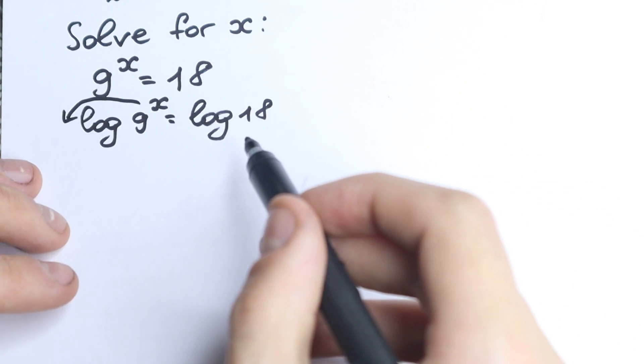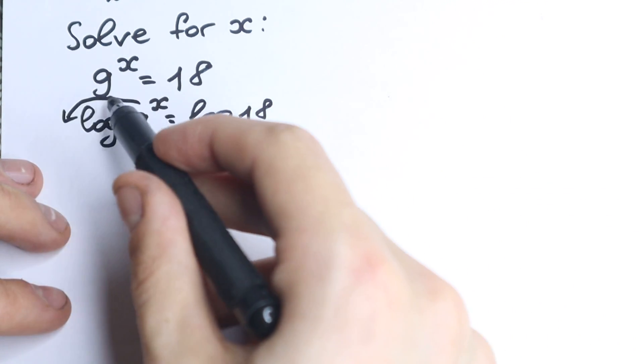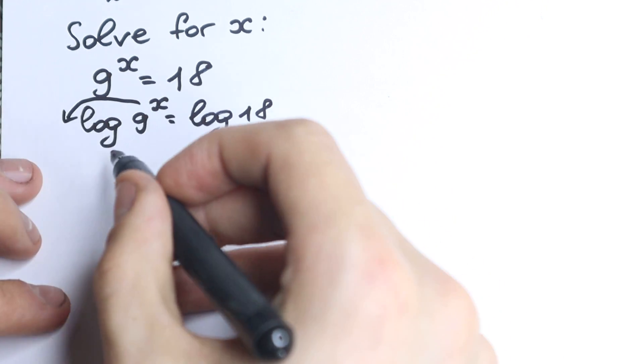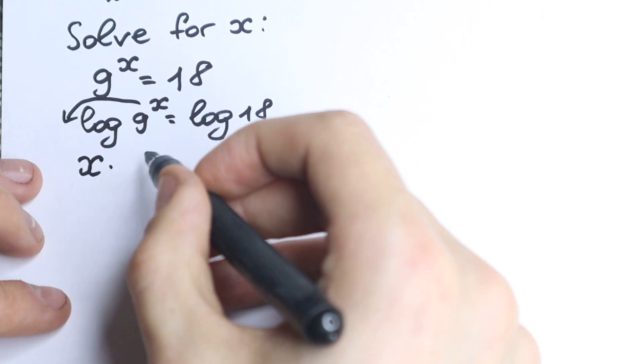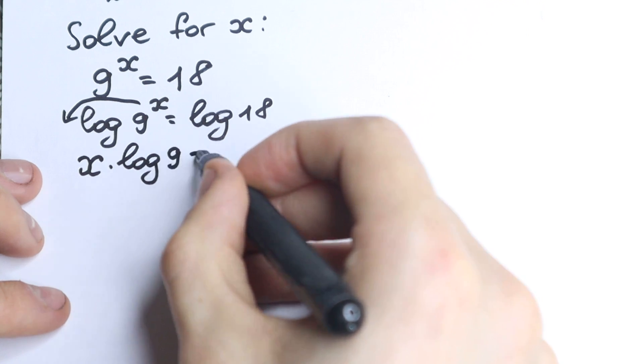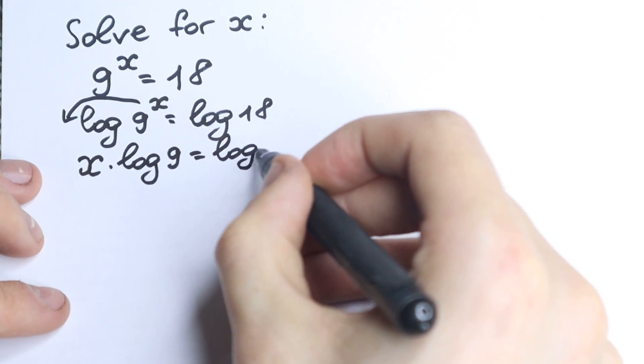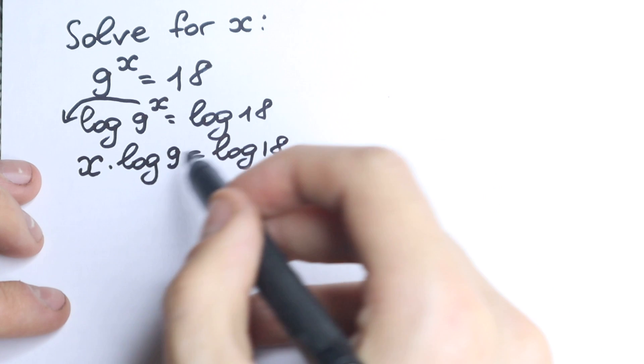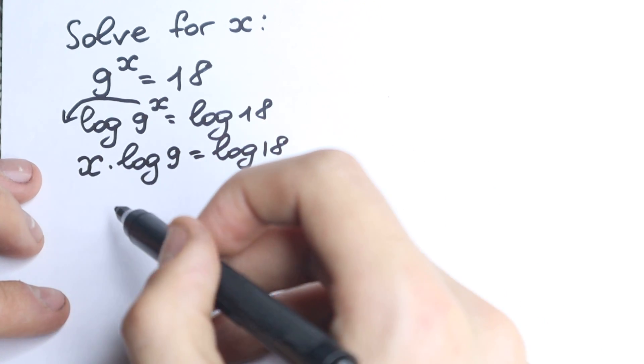So we have x · log(9) = log(18). This is a constant, this is a constant, and this is the variable we need to find. Let's divide both sides by log(9).